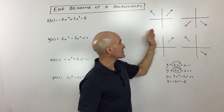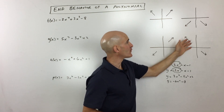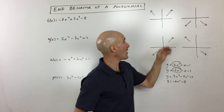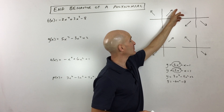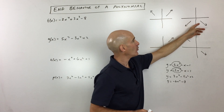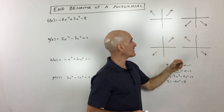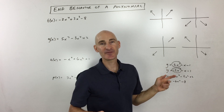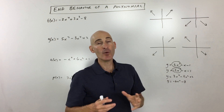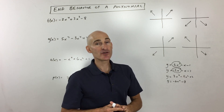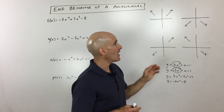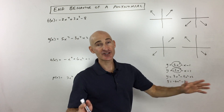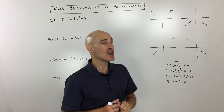The first thing we want to understand is that there are only really four things that can happen. The graph can either go up to the right or down to the right, and then it can either go up to the left or down to the left. But what determines whether the graph goes up to the right or down to the right? Let's talk about that first.